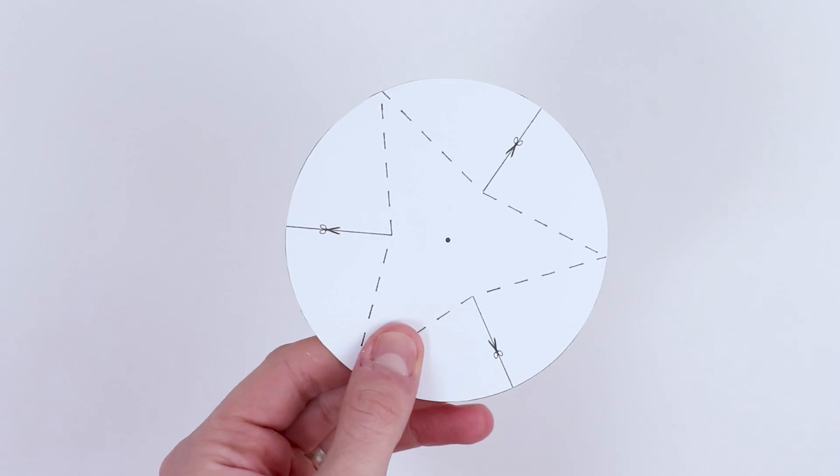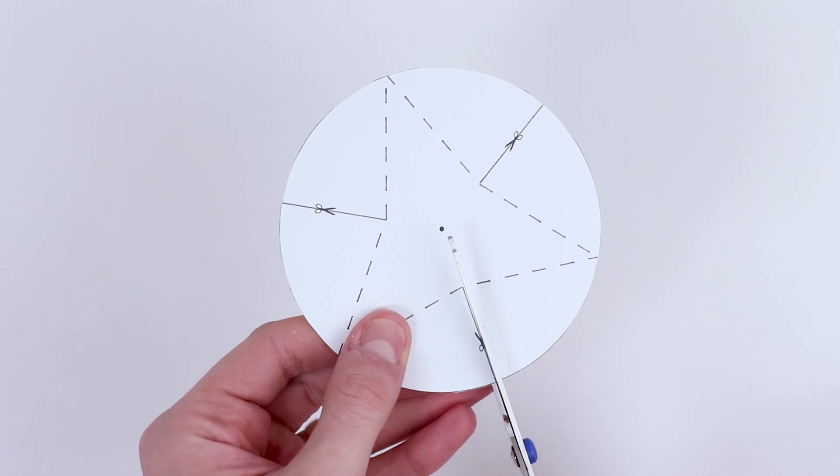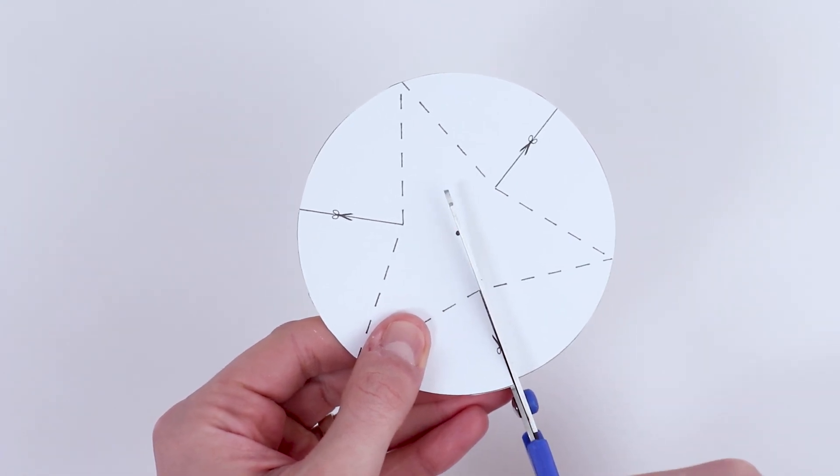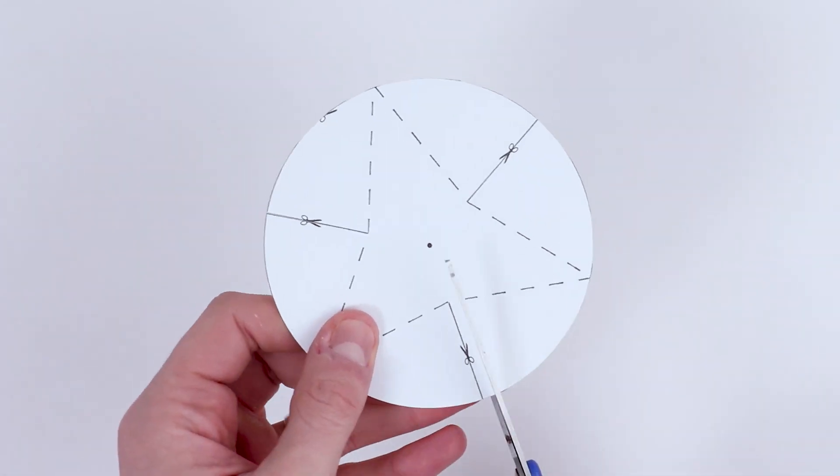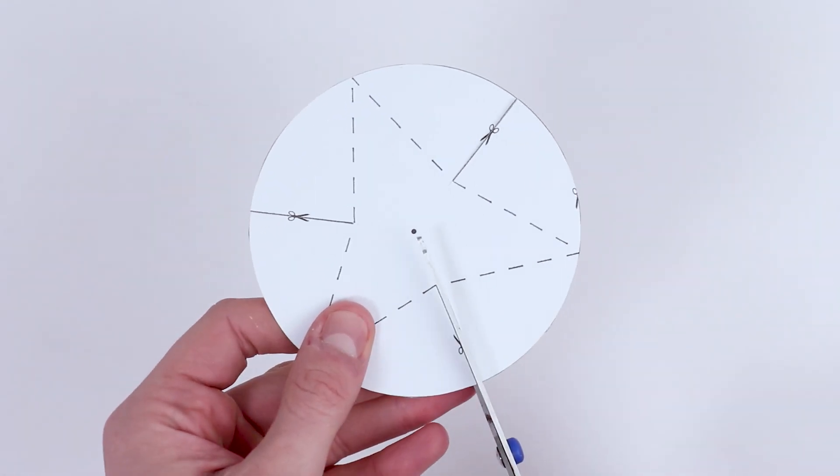You'll then need to cut along the three lines that point towards the middle of the circle as illustrated. Be careful not to cut all the way down.